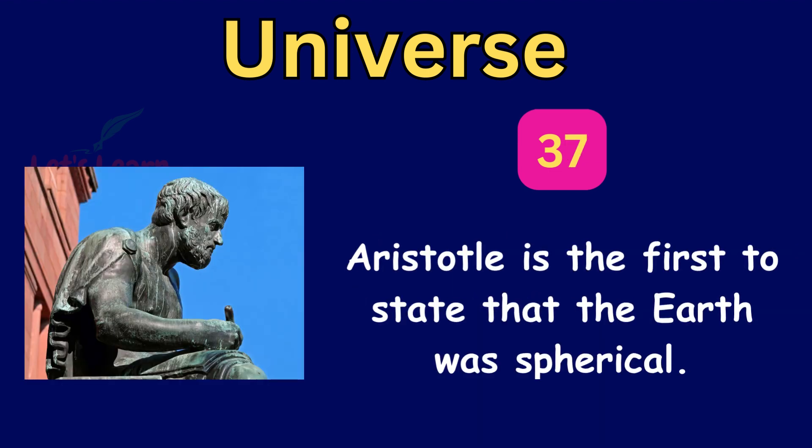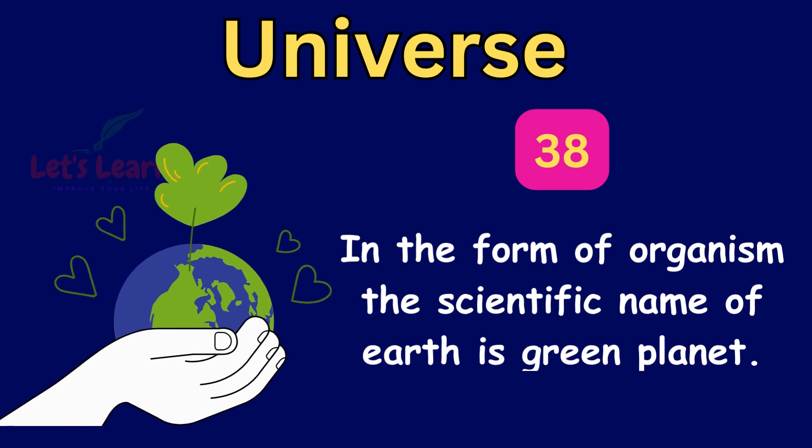Venus is the first to state that the Earth was spherical. In the form of organism, the scientific name of Earth is green planet.